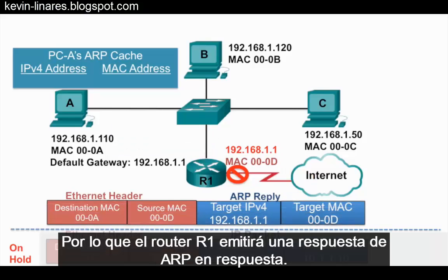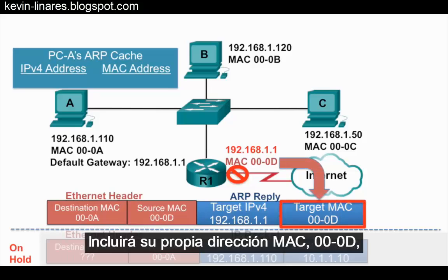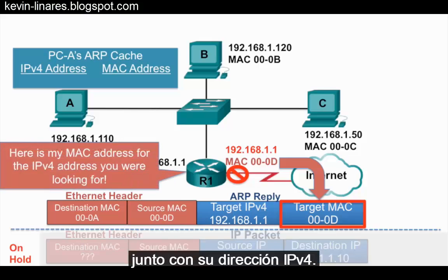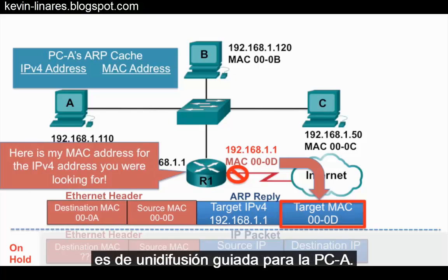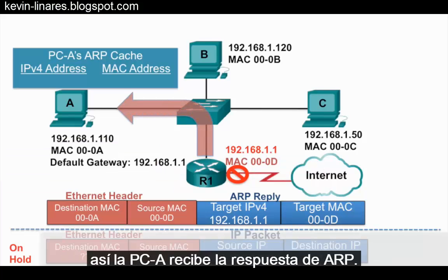So router R1 will issue an ARP reply in response. It will include its own MAC address, 000d, along with its IPv4 address. The destination MAC address of the ARP reply is a unicast directed for PCA, so PCA receives the ARP reply.